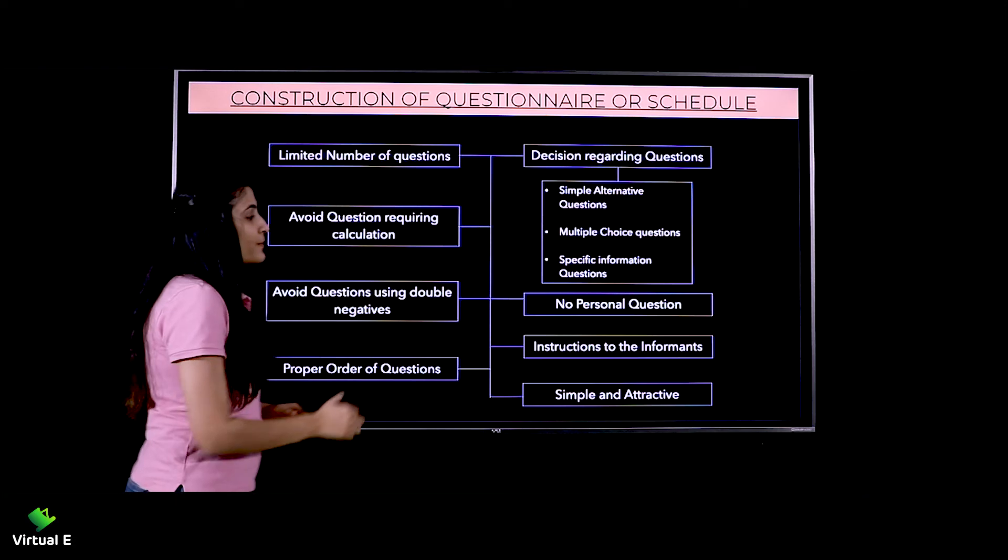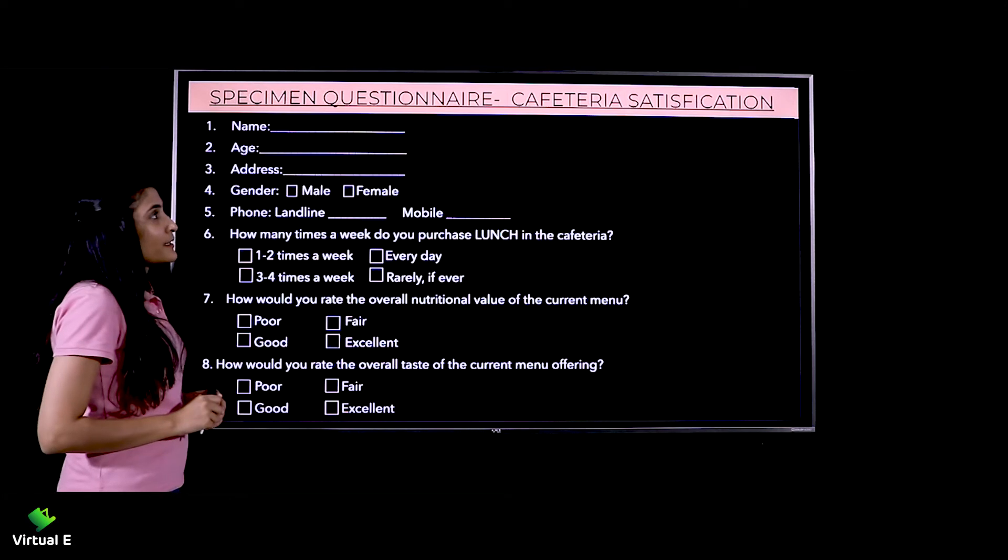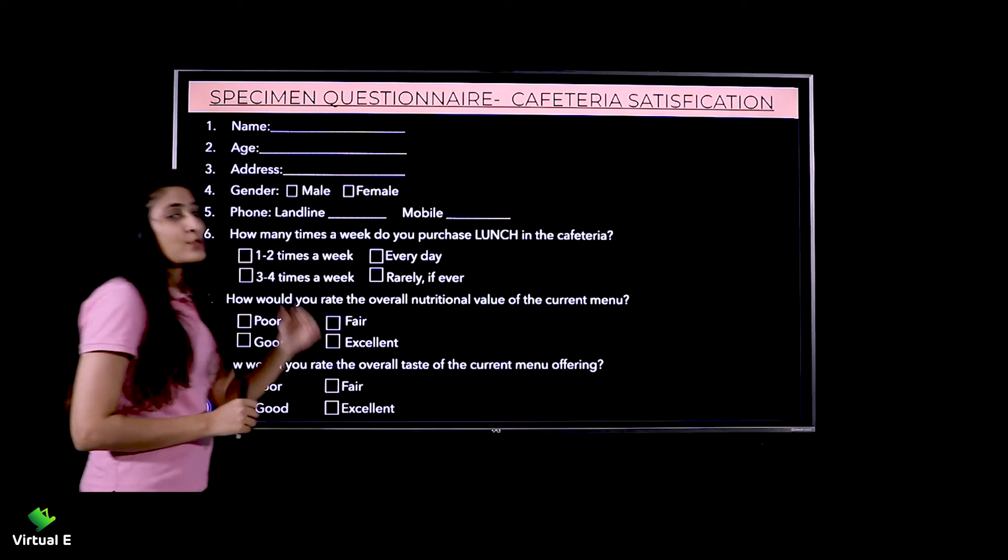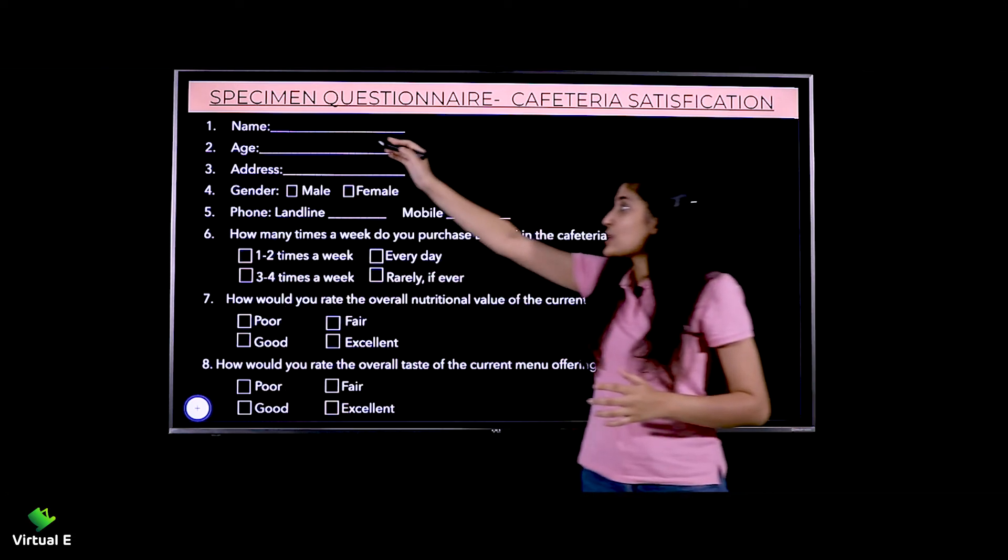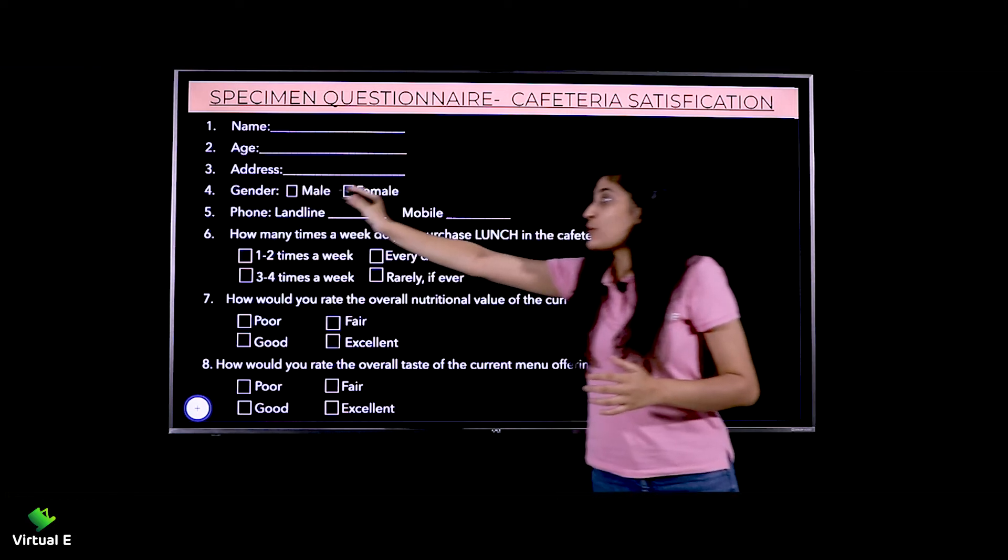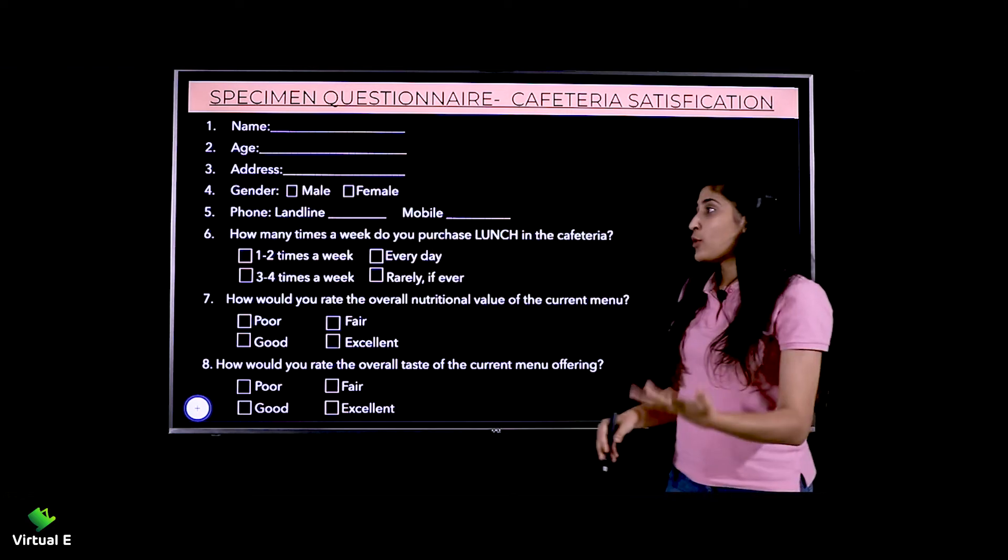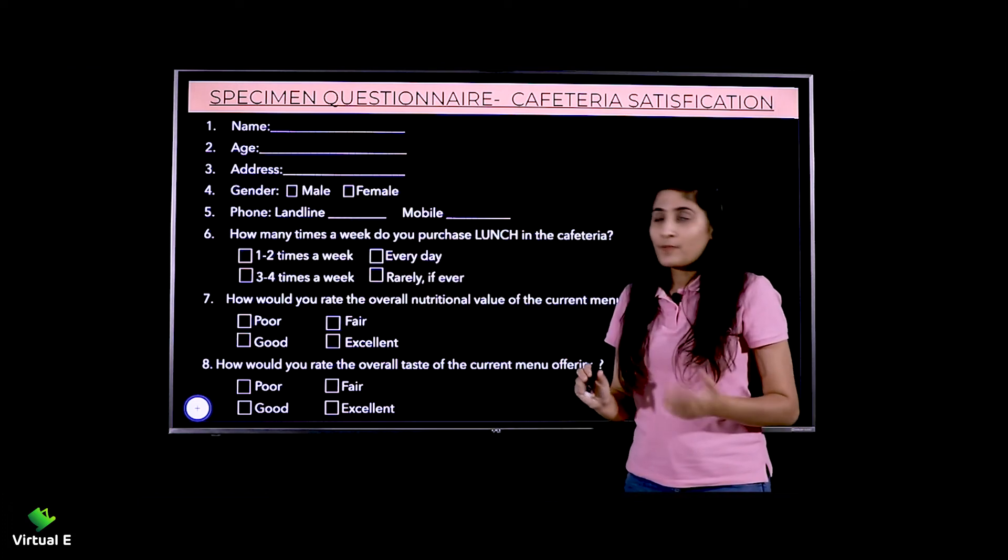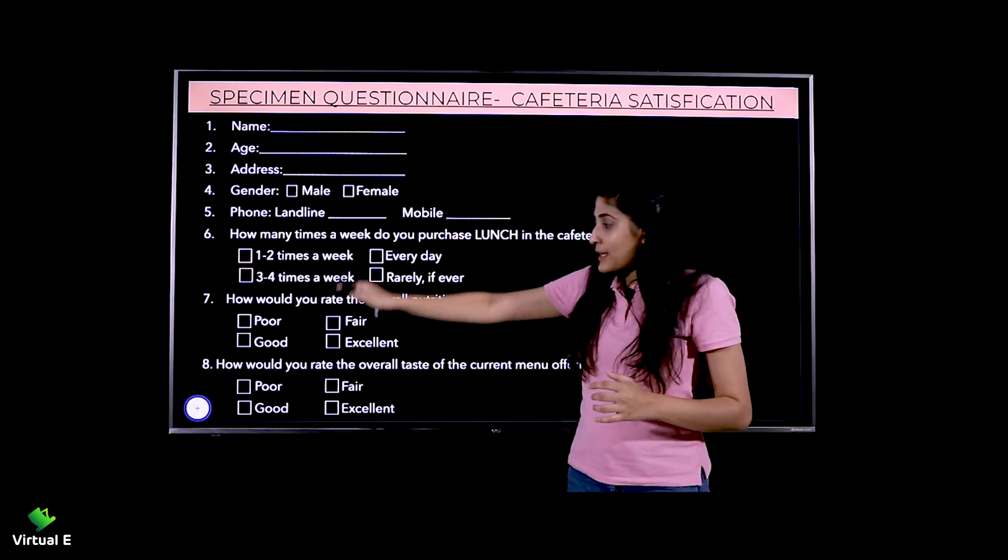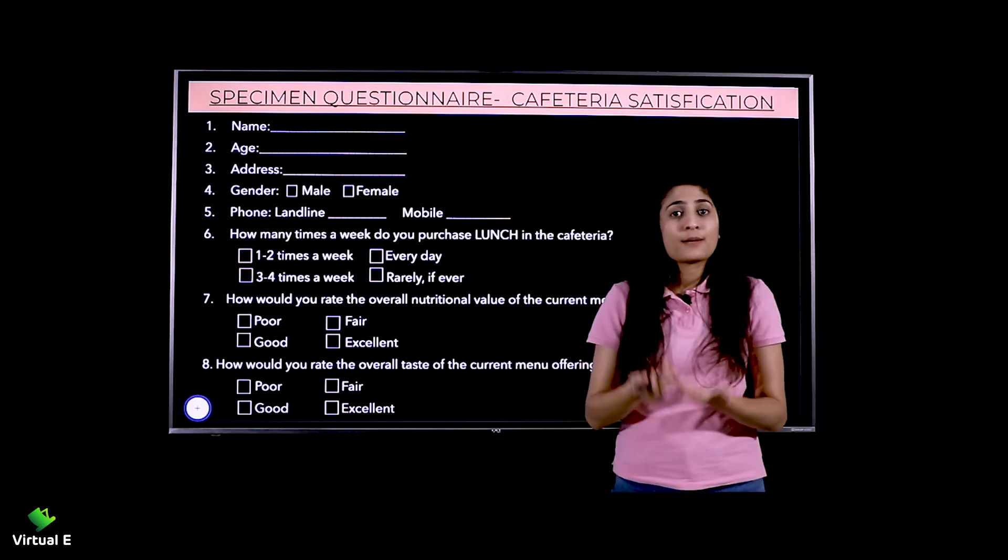Let's look at a specimen of this. See, first we've asked name, as I told you there should be proper order of questions. Then age, address, then you can ask gender - male or female. If you think you'll need the number, ask for landline or mobile number.